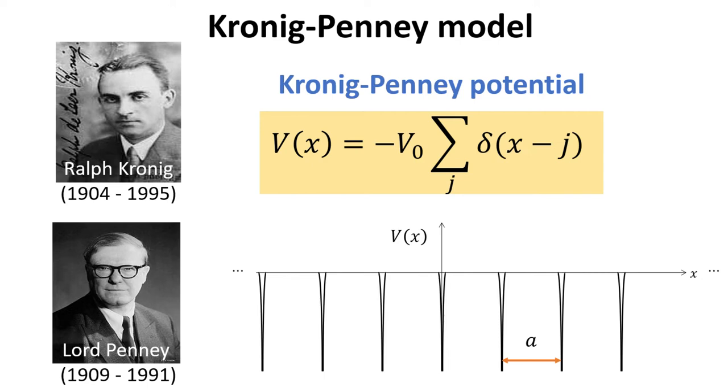We consider the Dirac-Delta version of the Kronig-Penney model, whose potential is highlighted in the yellow box and plotted below. Without loss of generality, we take the lattice constant to be a unit length. We now ask the question: what are the electronic states in the Kronig-Penney potential?